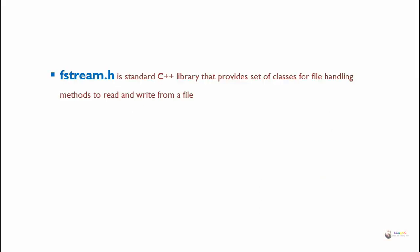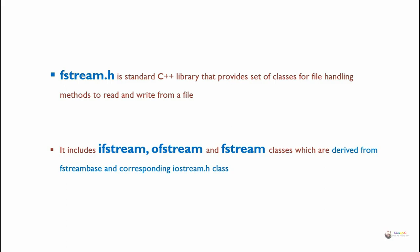fstream.h is a standard C++ library that provides a set of classes for file handling methods to read and write from a file. It includes ifstream, ofstream, and fstream classes, which are derived from fstreambase and corresponding iostream.h classes.